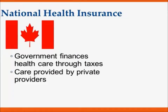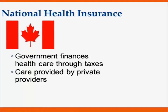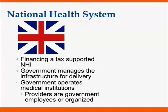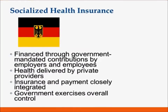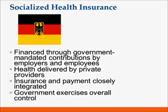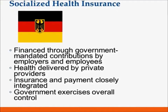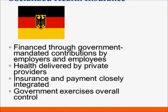These three systems are prime for a midterm exam question. For national health insurance, think Canada: the government finances healthcare through taxes and care is provided by private providers. For a national health system, think Great Britain: supported by taxes, the government manages the infrastructure for delivery and all providers are government employees. Finally, Germany represents socialized health insurance: financed by government mandates for both employers and employees, with healthcare delivered by private providers.